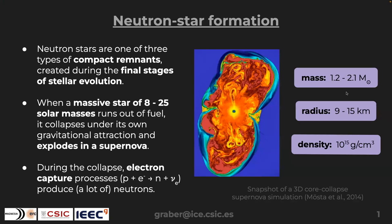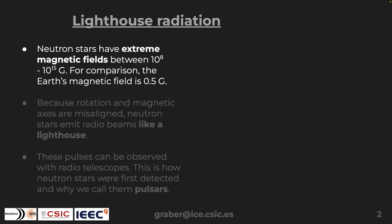What's left behind is an object with between one and two solar masses and radii of around 9 to 15 kilometers. Combining those numbers gives densities on the order of 10^15 grams per cubic centimeter — denser than atomic nuclei on Earth. We don't really know what's going on at these high densities, which is a major open problem, but these objects exist and we want to understand their properties.